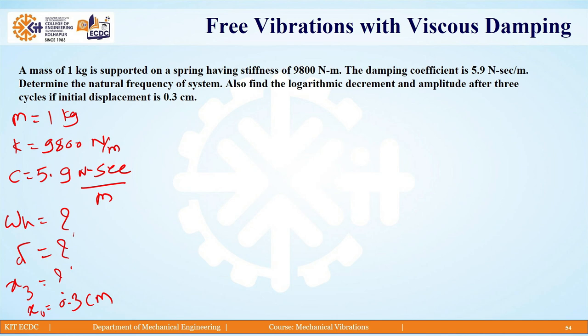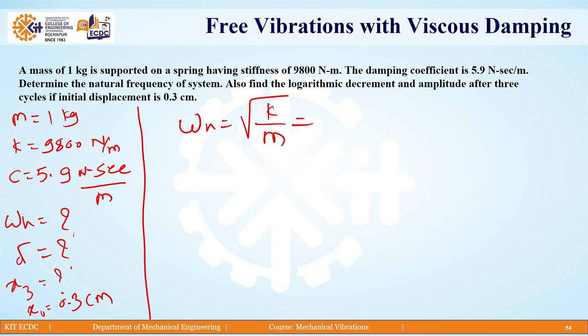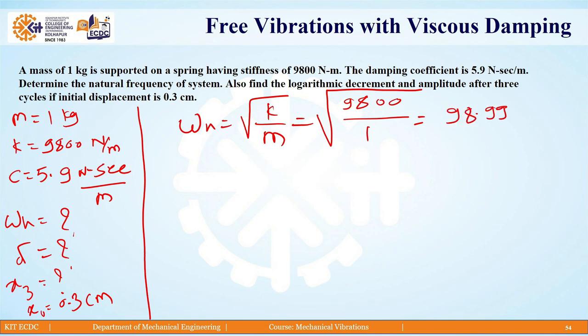Let us try to solve this numerical. First, we know the equation for natural frequency, which is under root of k by m. So, under root of k value 9800 upon mass 1 kg gives us under root of 9800, which is 98.99 radians per second. We also know the value of c which is 5.9 Newton second per meter.